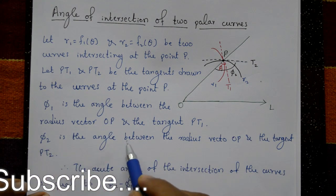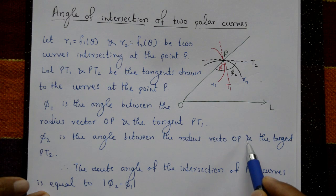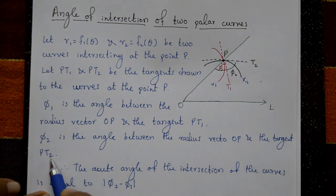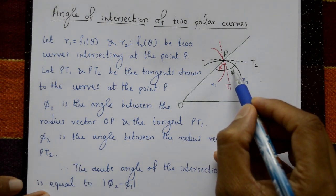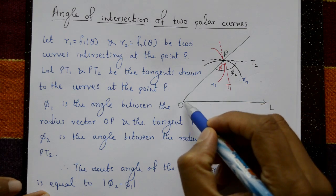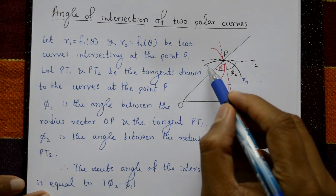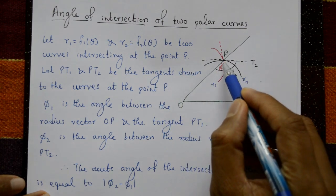φ2 is the angle between the radius vector OP and the tangent PT2.